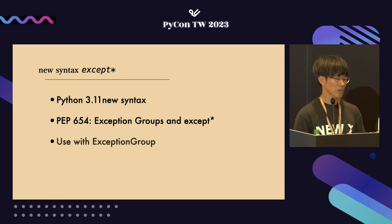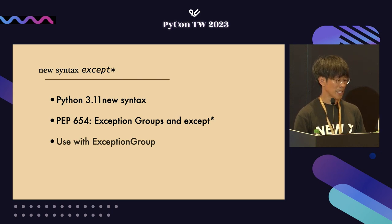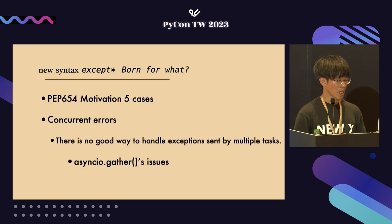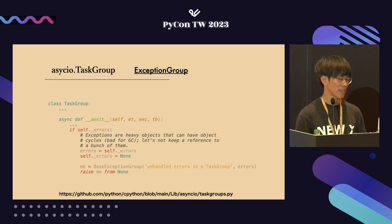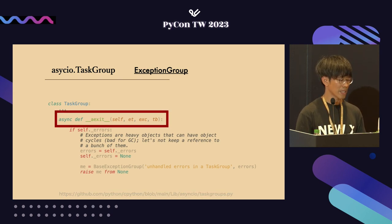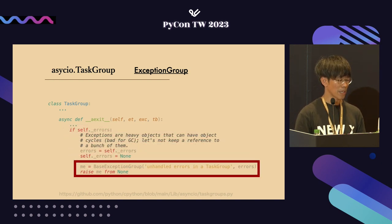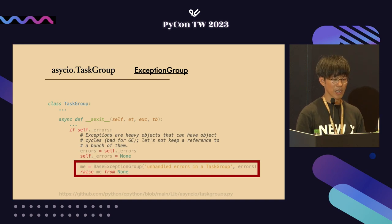except* is the new syntax in Python 3.11, accepted in PEP 654 — ExceptionGroup and except*. It's used when you need to raise multiple unrelated exceptions. PEP 654 lists five motivations; among them, concurrent errors — it mentions the challenge with asyncio.gather which doesn't have a good way to handle exceptions across multiple tasks. The CPython code for asyncio.TaskGroup bundles its own errors and throws a BaseExceptionGroup; if the contents are only subclasses of Exception, it returns an ExceptionGroup.